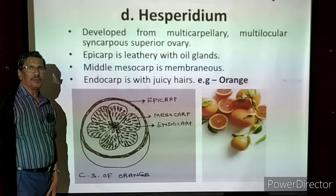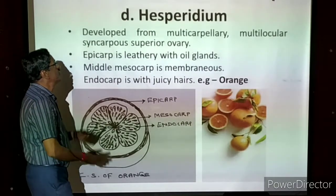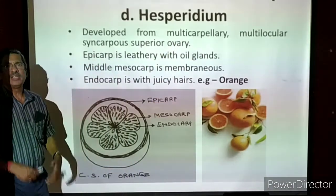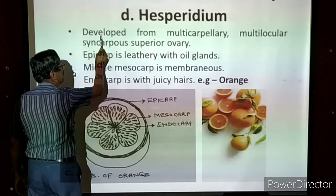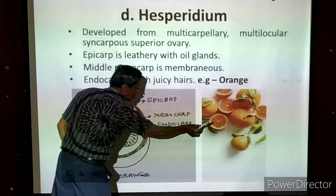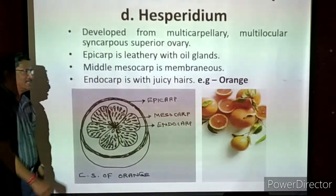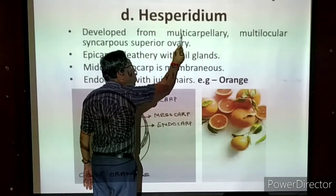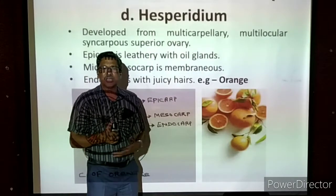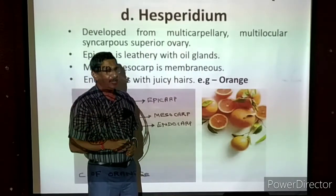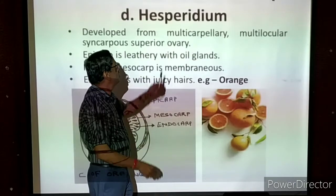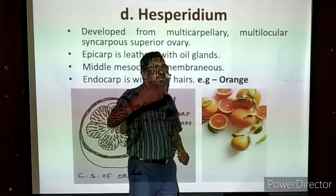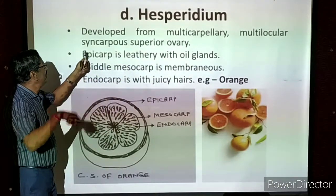The fourth type of simple fleshy fruit is called hesperidium. The best example is orange. This fruit is developed from a multicarpellary, multilocular, syncarpous ovary. Multicarpellary means many carpels — if you cut the fruit, many small divisions are there, each one developed from one carpel. Multilocular means many locules, which are cavities or chambers.